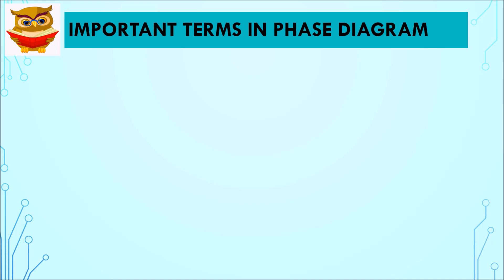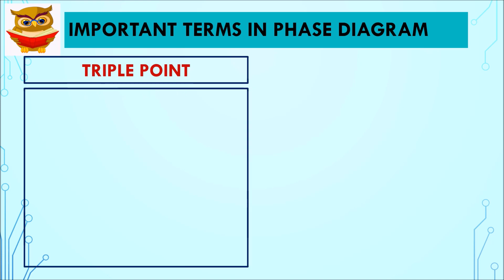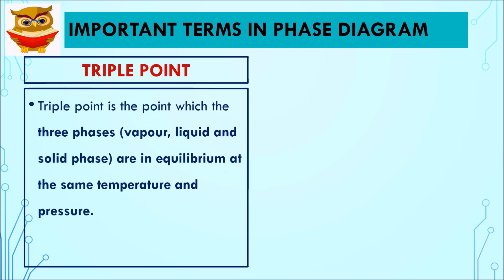Let's look into some important terms in a phase diagram. First, triple point. Triple point is the point which three phases, namely vapour, liquid and solid are in equilibrium at the same temperature and pressure.